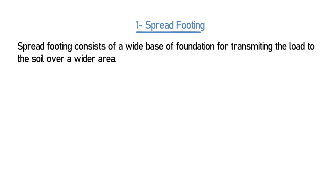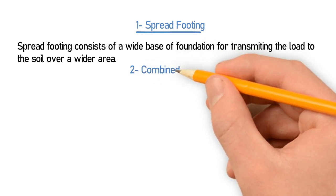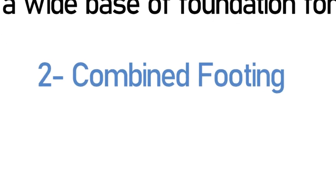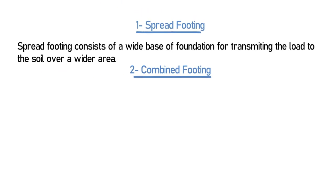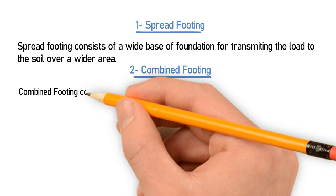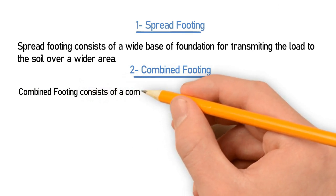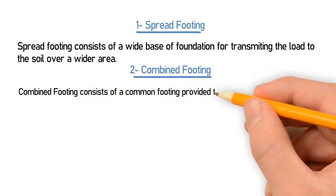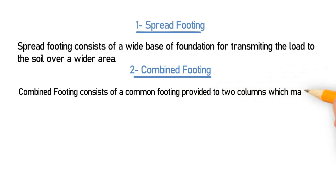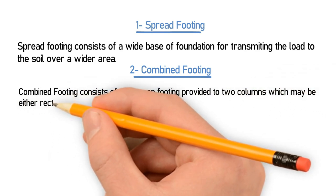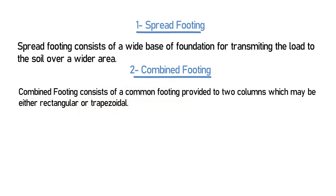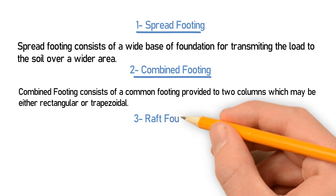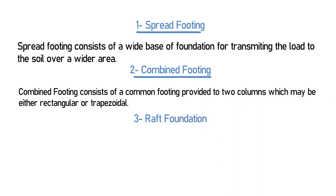The second type is combined footing. Combined footing consists of a common footing provided to two columns, which may be either rectangular or trapezoidal in shape. This type of footing is called combined footing.